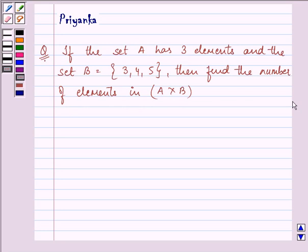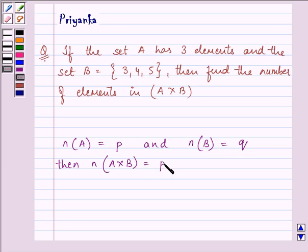Here in this question, we will use that if there are P elements in set A and Q elements in set B, then the number of elements in A cross B will be P into Q. That is, if the number of elements in set A is equal to P and number of elements in set B is equal to Q, then number of elements in A cross B is equal to P into Q.